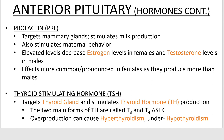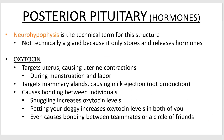Moving on to the posterior pituitary, or neurohypophysis — it's not technically a gland, as it doesn't make its own hormones. It only receives hormones from the hypothalamus and releases them as needed. There are only two: oxytocin and antidiuretic hormone. Oxytocin has many functions; the ones you're probably familiar with are uterine contractions during labor.